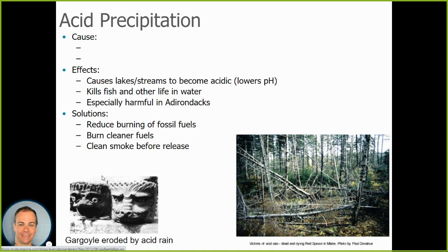Another environmental issue is acid rain, also called acid precipitation. You may recall from earlier in the year when we studied pH and did the lab with litmus paper. A liquid can be acidic or more basic. Acid precipitation is when the pH of rain, snow, or sleet is reduced, making it more acidic.